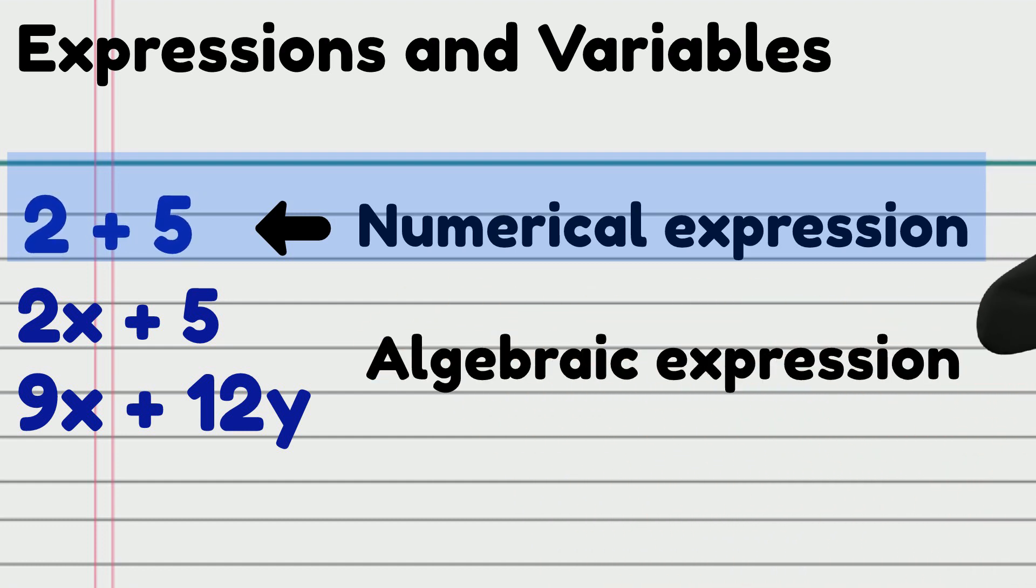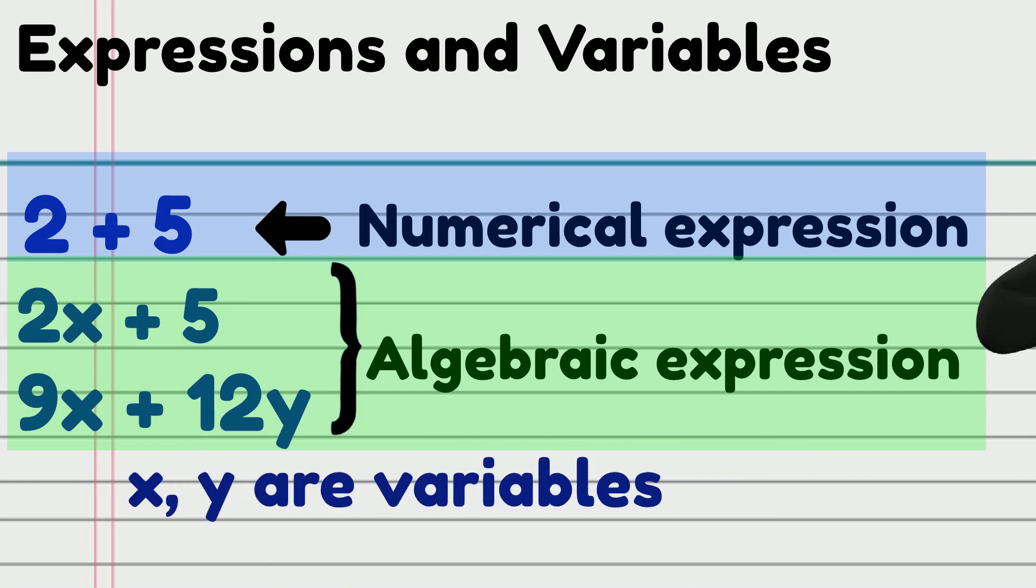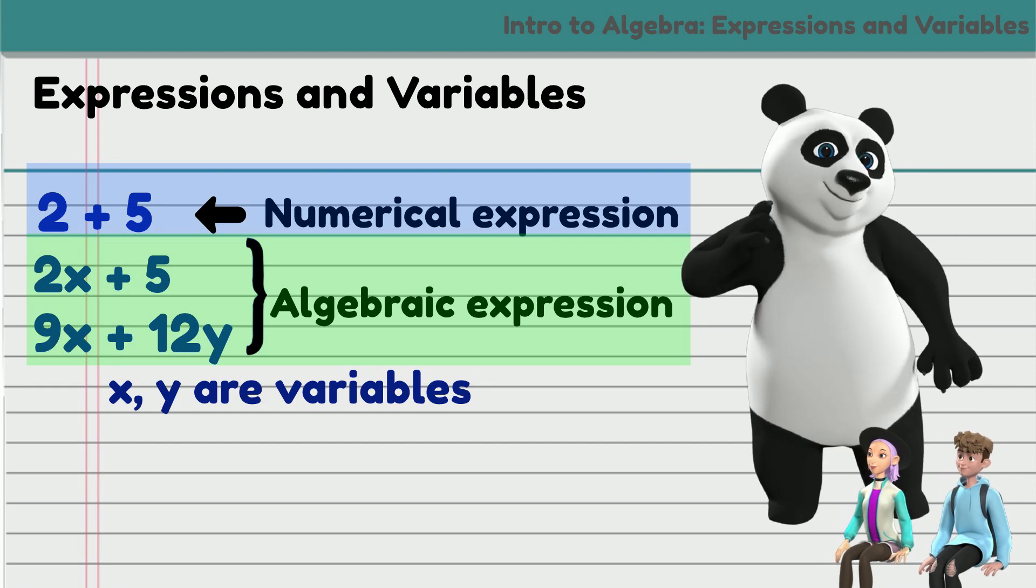An algebraic expression on the other hand, consists of unknown variables, numbers and operations. It also does not contain any equality or inequality symbols. Examples are 2x plus 5 and 9x plus 12y. X and y in these expressions are the variables. Variables can be any letter that may contain any or various values.